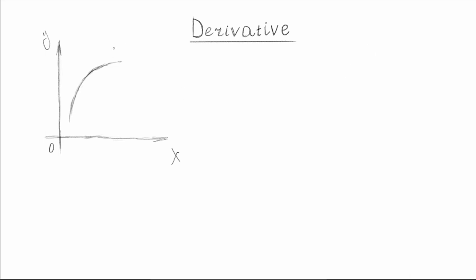Now if we take a look at this graph that we have here, f of x — let's take some value of x, so this will be x0, or the initial value for x. For this value of x we will have some value of y. Now let's add to our x0 some other value, so that we will have another point that we will call x0 plus delta x.